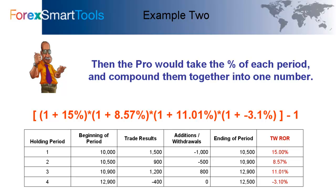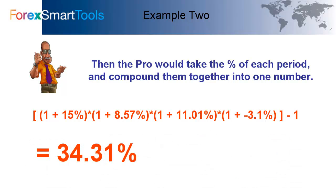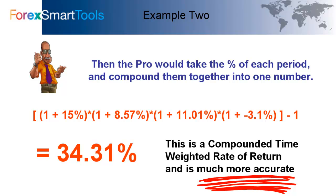For this example, that means we take (1 + 15%), multiplied by (1 + 8.57%), multiplied by (1 + 11.01%), multiplied by (1 - 3.1%), then minus one. That gives us 34.31%. This is a compounded, time-weighted rate of return, and is a much more accurate value for really knowing how you're doing in an account.